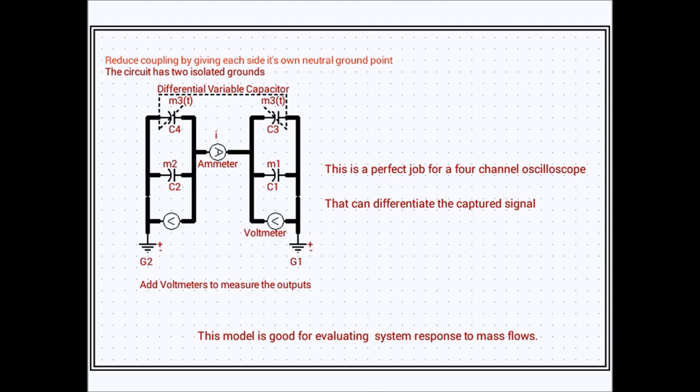Similarly the ammeter measures the current going into this block or out of this block. So it depends upon the direction of the current as to whether this block is experiencing a force that is positive or negative.